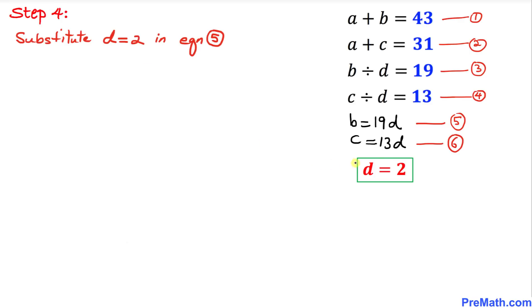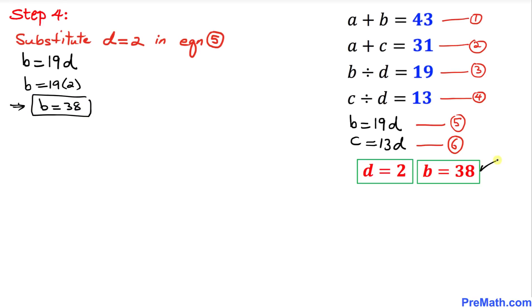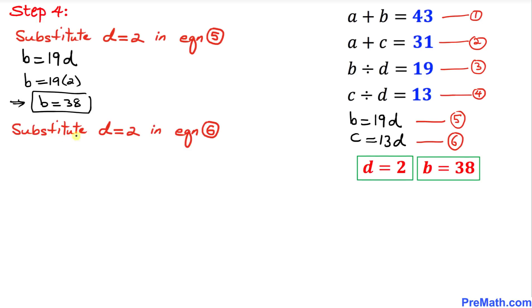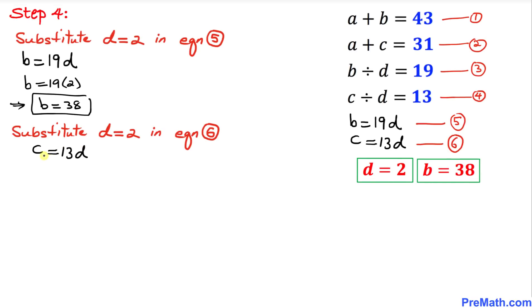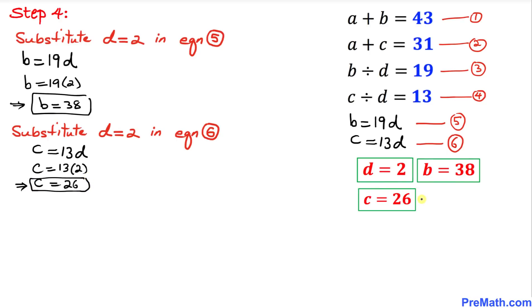Let's substitute D equals 2 into equation number five: B equals 19 times 2, so B equals 38. Now substituting D equals 2 into equation number six: C equals 13 times 2, so C equals 26.